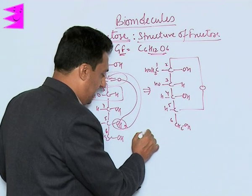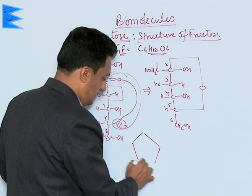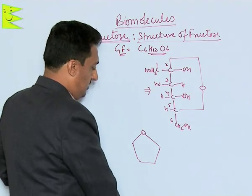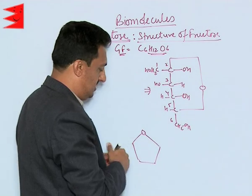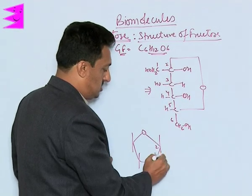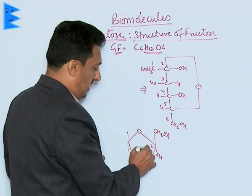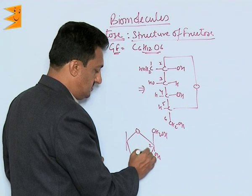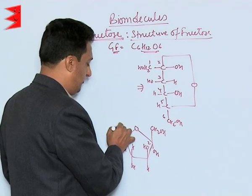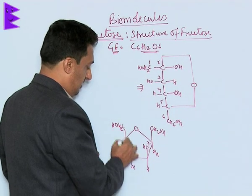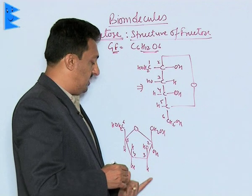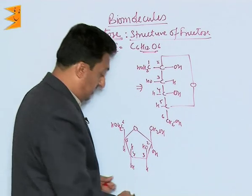The furanose structure can be drawn in Haworth projection by converting the vertical Fischer projection into a horizontal structure. Carbon 2 has an OH group on the right-hand side, so it comes downward with CH2OH. Carbon 3's OH is on the top, carbon 4 has H, carbon 5 has H and the CH2OH group. Fructose is levorotatory, so it is designated as minus fructose.